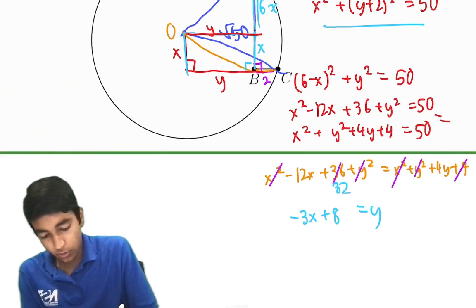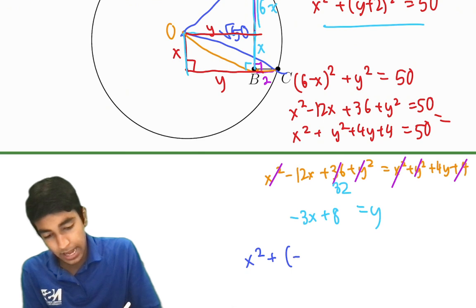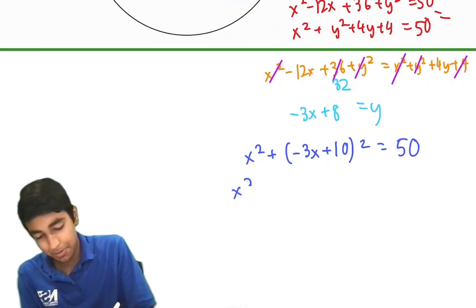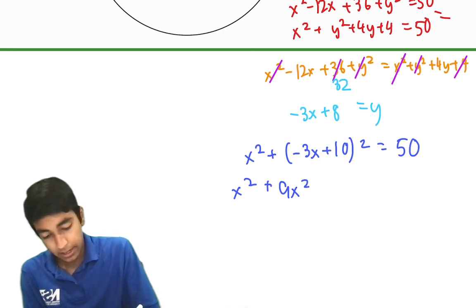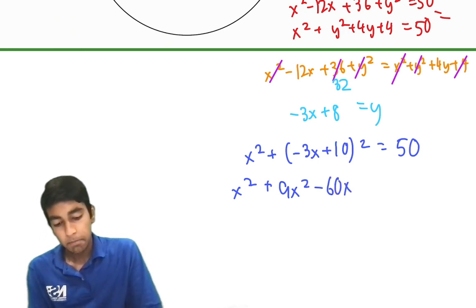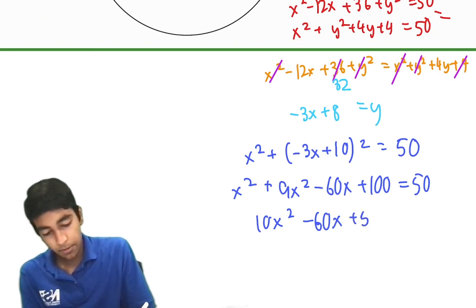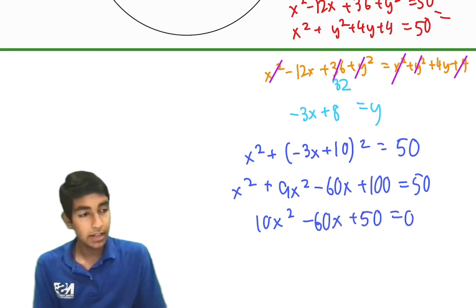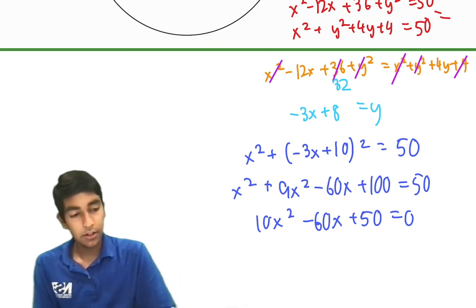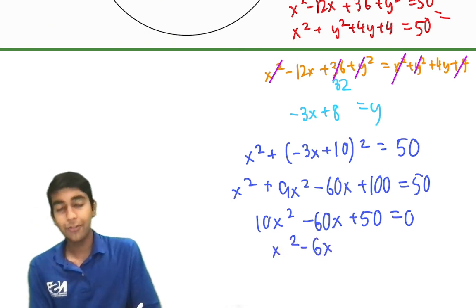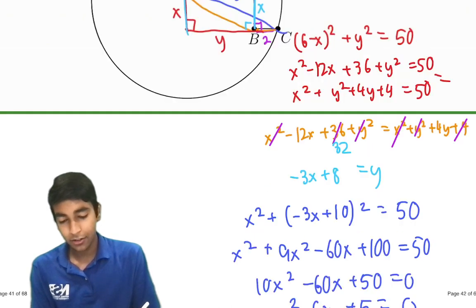x squared plus (y plus 2) squared. That's (negative 3x plus 8 plus 2) squared equals 50. And it's just now a routine algebra problem. x squared plus (negative 3x plus 10) squared. 9x squared minus 2 times 3 times 10, which is minus 60x, plus 100 equals 50. 10x squared minus 60x plus 50 equals 0 because we subtract 50 from both sides of the equation. And then we divide by 10 the whole equation because, as you can see over there, it's all divisible by 10, every single term. So we divide by 10 to the whole equation: x squared minus 6x plus 5 equals 0. We can factor this out to get x equals 5 or 1.